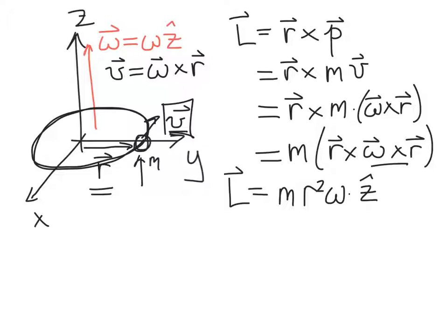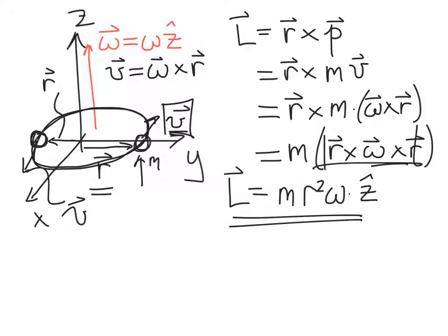When the point particle executes circular motion and comes around to the other side, the position vector is now different. But if you take the cross product of r and v in the same way, you'll get exactly the same angular momentum. So for a particle trapped in the x-y plane with a rotation vector pointing along the z direction, the angular momentum is constant in magnitude and points along the z-hat direction.